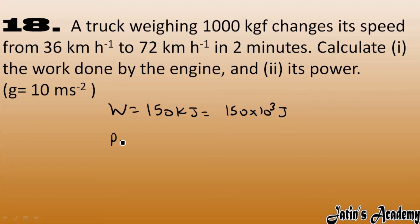Power we have work done per unit time. Work done we got it as 150 into 10 raise to power 3 and time is given in 2 minutes. Let's convert it into seconds. So in 2 minutes we will have 2 into 60 which is 120 seconds. So cancel it out.